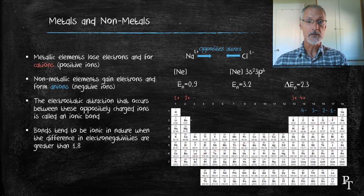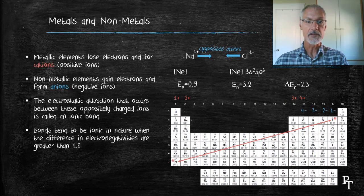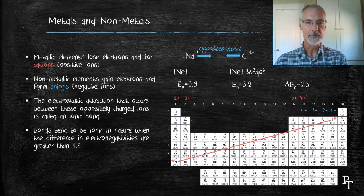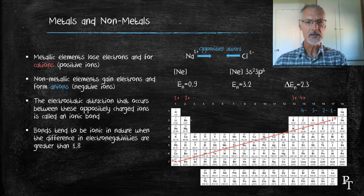The most ionic combination would occur between these two elements, fluorine and francium, at opposite ends, or opposite diagonals, of the periodic table. The closer elements are to each other, the less ionic the bond tends to be.